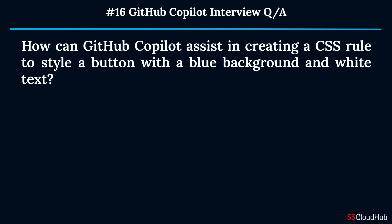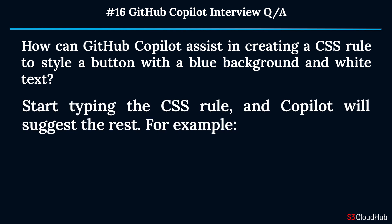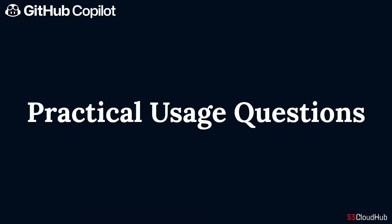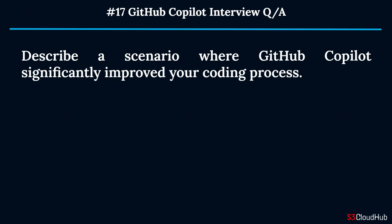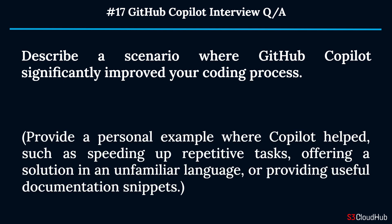Question sixteen: How can GitHub Copilot assist in creating a CSS rule to style a button with a blue background and white text? Start typing the CSS rule and Copilot will suggest the rest. The third topic is practical usage questions.